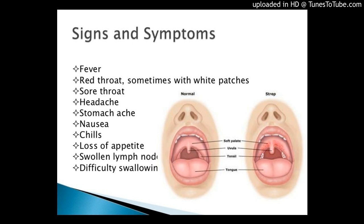Complications. Serious group B strep infections, such as sepsis, infection of the blood, and pneumonia, infection of the lungs, in adults can be fatal. On average, 1 out of every 20 — 5% — non-pregnant adults with invasive group B strep infections die. Risk of death is lower among younger adults and adults who do not have other medical conditions.